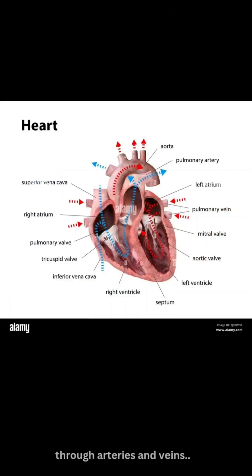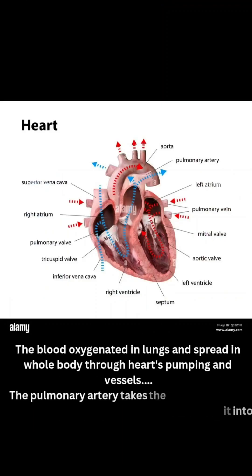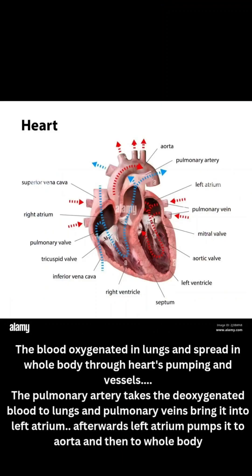It helps to deliver blood to each body part through arteries and veins. The blood is oxygenated in the lungs and spread throughout the whole body through the heart's pumping via vessels. The pulmonary artery takes deoxygenated blood to the lungs, and pulmonary veins bring it into the left atrium. Afterwards, the left atrium pumps it to the aorta and then to the whole body.